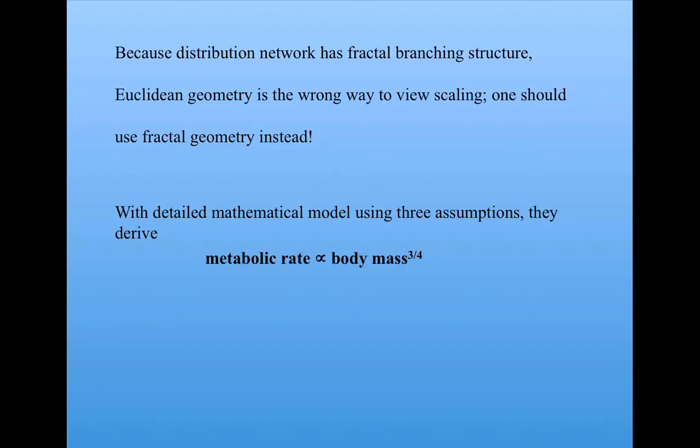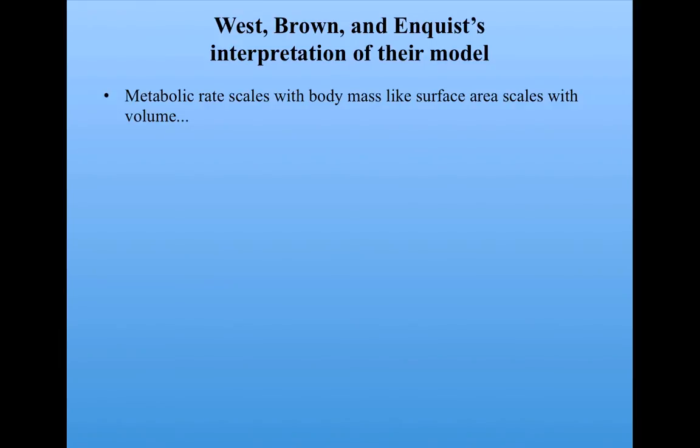To finish, I want to talk about one of the things I found most interesting in reading about this model, which was the interpretation described by the West-Brown and Enquist team. Recall that the surface hypothesis, which turned out not to match the data, was based on the idea that surface area scales with volume to the two-thirds power. Well, what West-Brown and Enquist say is that metabolic rate indeed scales with body mass like surface area scales with volume, but not in three dimensions. Rather, the geometric scaling is in four dimensions.